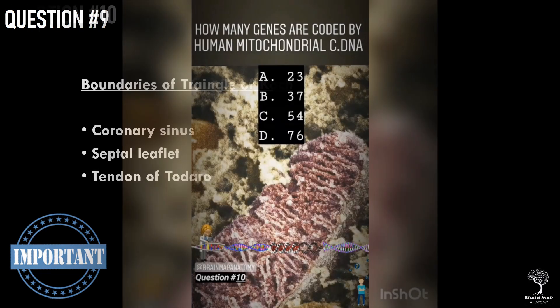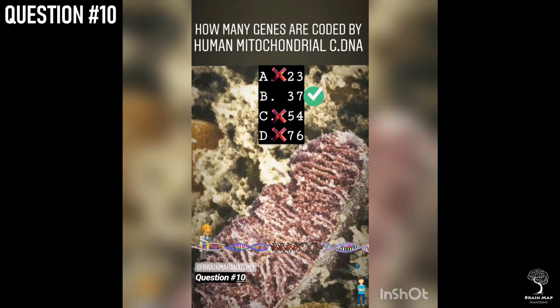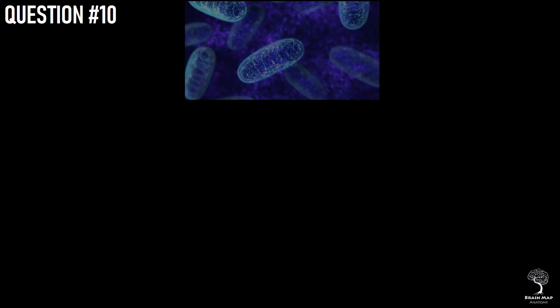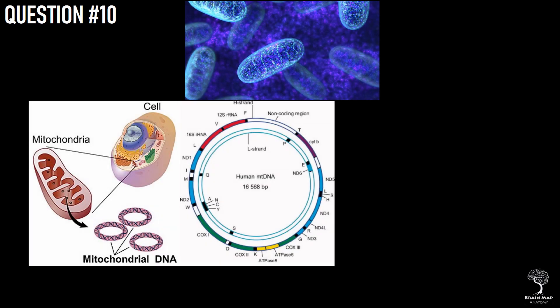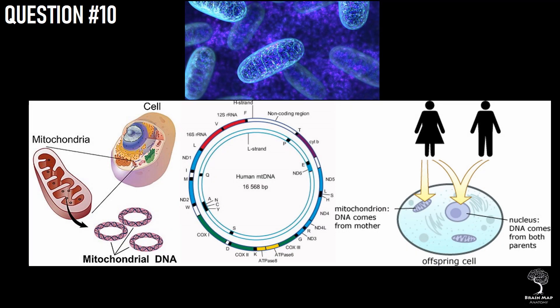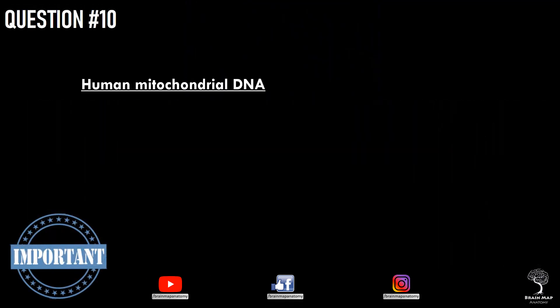Question 10. How many genes are coded by human mitochondrial DNA? The right answer is option B, 37. The human mitochondrial DNA, mtDNA, is a double-stranded, circular molecule of 16,569 base pairs and contains 37 genes. The mammalian mitochondrial genome is transmitted exclusively through the female germline.